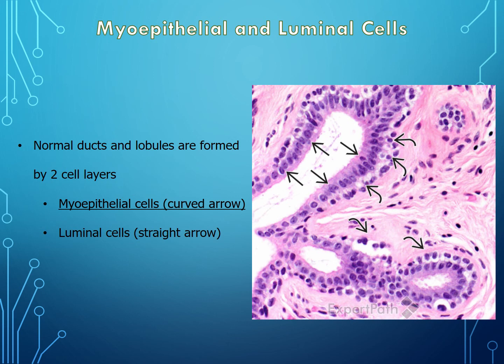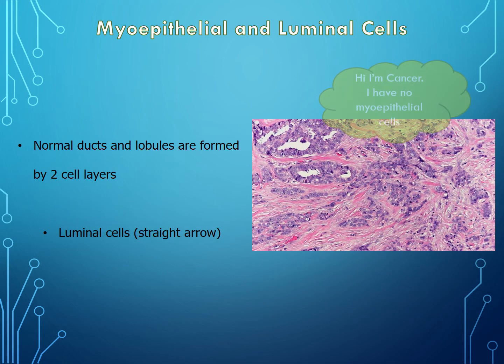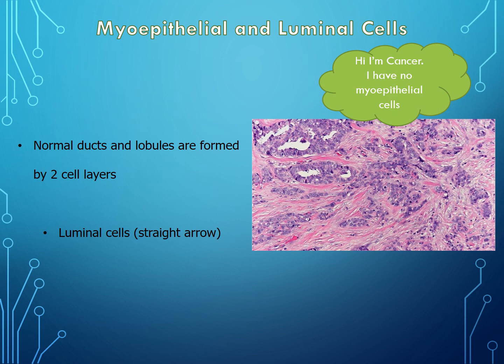An important concept: in cancer, myoepithelial cells are gone. This is what cancer looks like — invading through the tissue causing a desmoplastic reaction — and these glands do not have any myoepithelial cells.